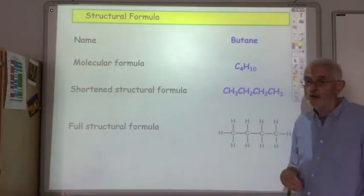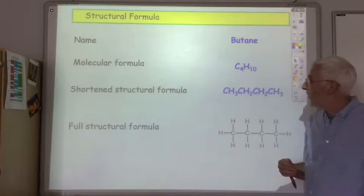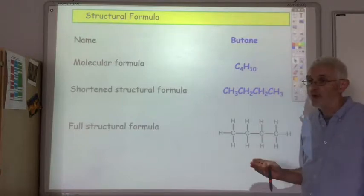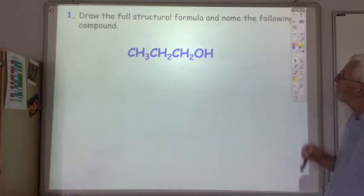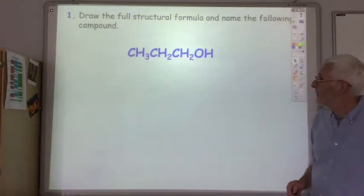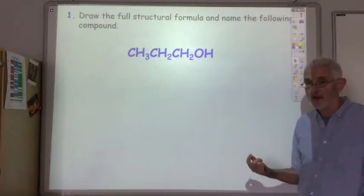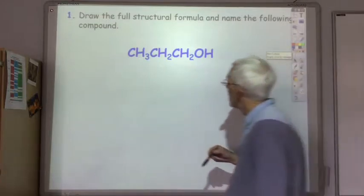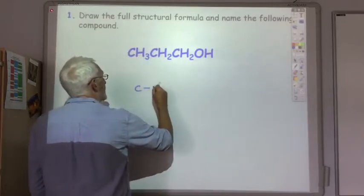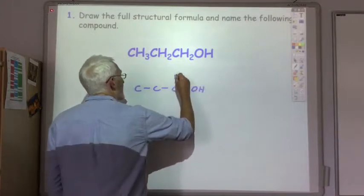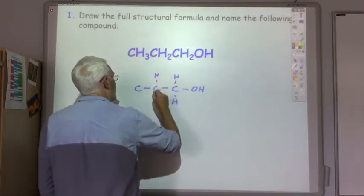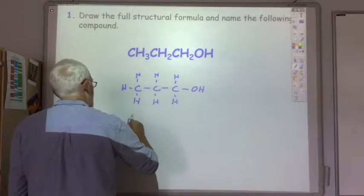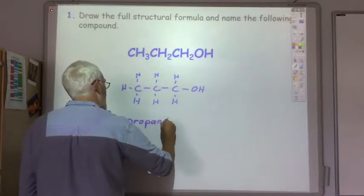So what we're going to do in the next few slides is I'll give you the shortened structural formula for an organic compound, and then you have to draw the full structural formula and name it. So, for example, draw the full structural formula and name the following compound. So I suggest you pause the tape, try it yourself, and restart it and I'll go for the answer. Okay, so the full structural formula is this, which will be propan-1-ol.